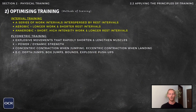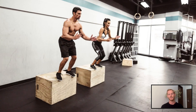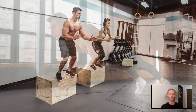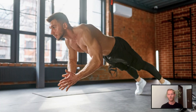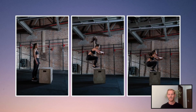Plyometric training involves performing explosive exercises where the muscles rapidly lengthen and shorten. It's specifically intended to improve power, or the ability to apply lots of force over an extremely short period of time. Exercises like squat jumps, bounds, and depth jumps require muscles to work concentrically when jumping and eccentrically upon landing.